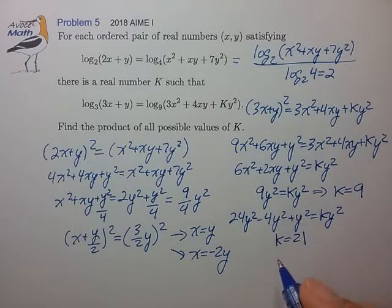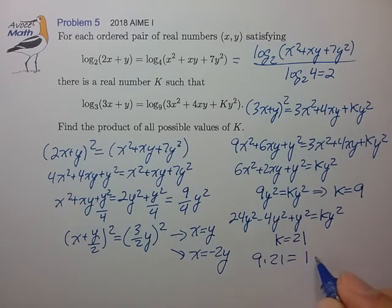Those are the only two possibilities. So 9 times 21 equals 189.